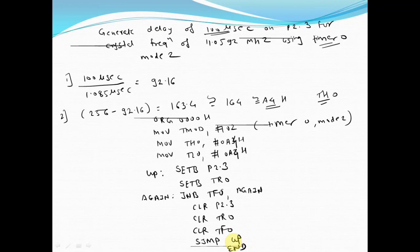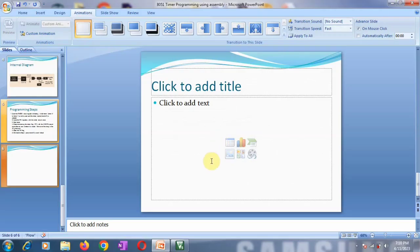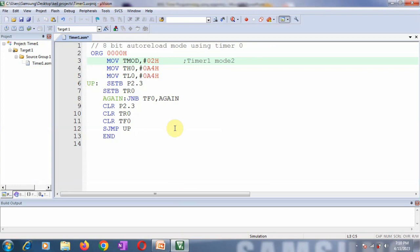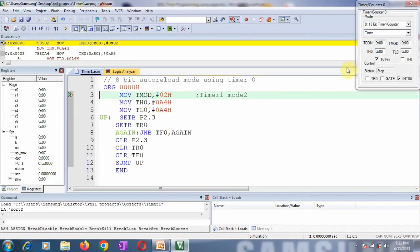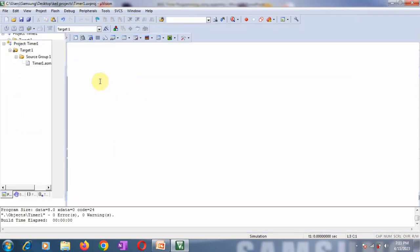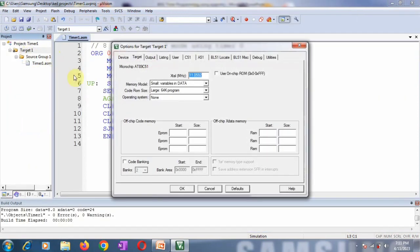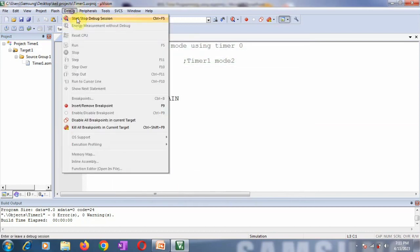This is a program I have already written using timer 0. Now I will first compile this and save and build this program - zero errors and zero warnings. Now go to Debug, Start/Stop Debug Session, and remember to change the frequency. It is 11.0592 MHz. For changing frequency, you have to right-click on Target 1, Options for Target 1, and here there is an option for changing frequency. By default here it is 24 megahertz. Change it to 11.0592 megahertz. Frequency selection is very important.